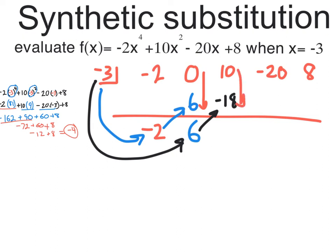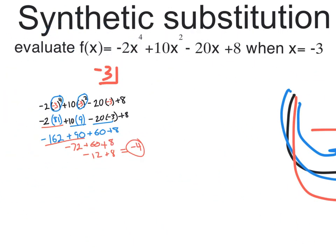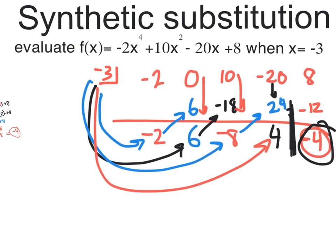Then 10 and negative 18 is negative 8, and then negative 3 times negative 8 is positive 24. Then the negative 20 and the positive 24 is 4, and then negative 3 times 4 is negative 12. This last part is usually our remainder in synthetic division, but right here we're doing synthetic substitution, and this remainder part is no longer the remainder—it's actually the answer of you evaluating it with the value x equals negative 3. So your answer is negative 4. It's the same answer, negative 4, but synthetic substitution is way faster.